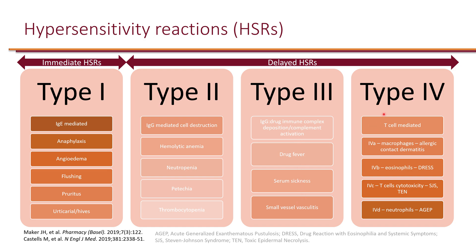Type 4 is T-cell mediated and can be extremely severe, so it is broken into subtypes 4A, B, C, and D. Type 4A involves macrophages — allergic contact dermatitis. Type 4B involves eosinophils — DRESS (drug reaction with eosinophilia and systemic symptoms). Type 4C is T-cell cytotoxicity, causing Stevens-Johnson syndrome and toxic epidermal necrolysis. Type 4D involves neutrophils and can cause acute generalized exanthematous pustulosis.